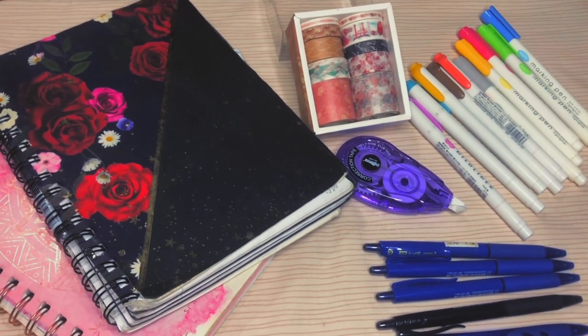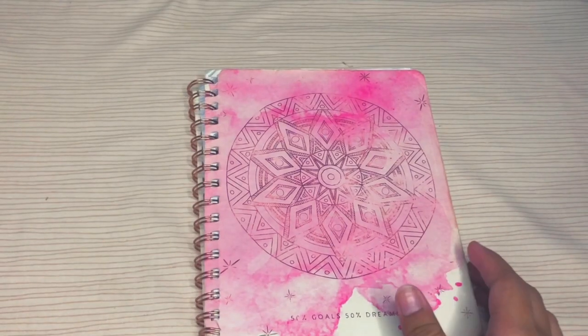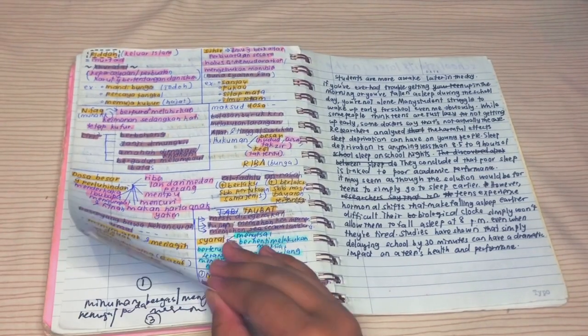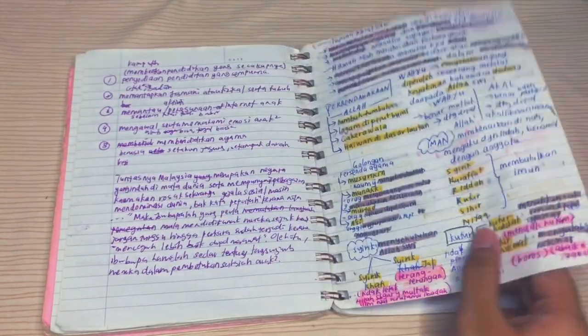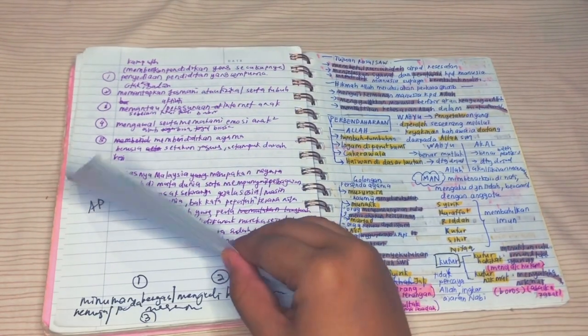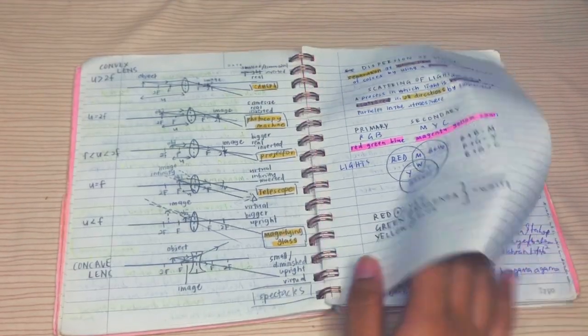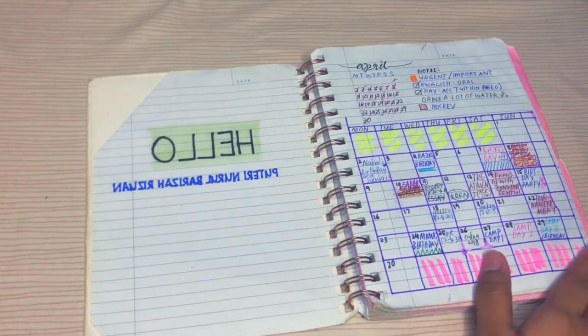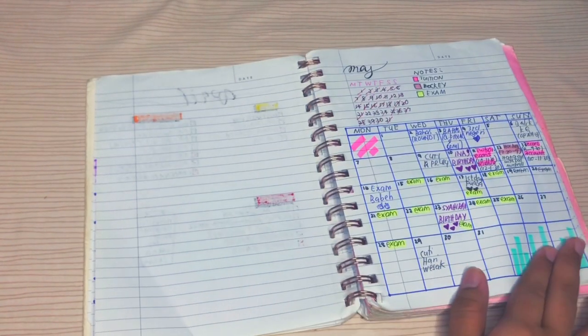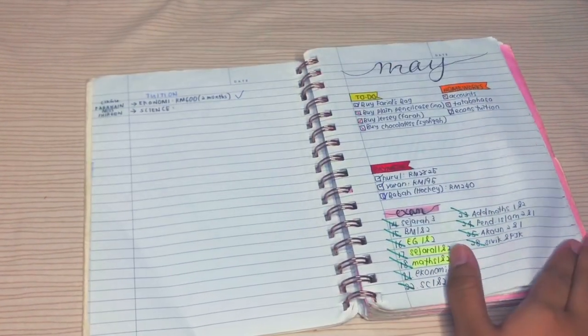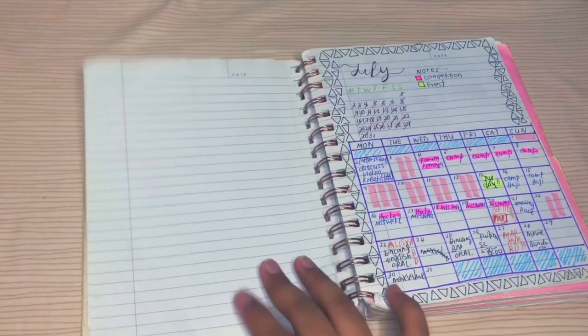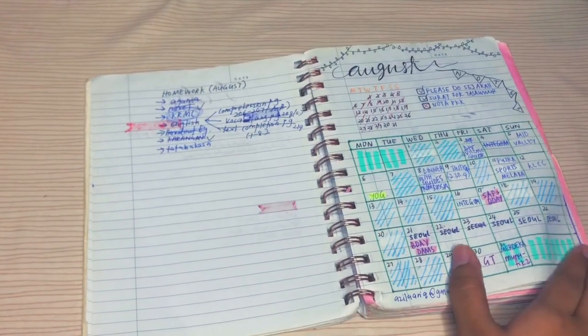So yeah, that's basically the stationeries that I use. Now I'm going to show you my notes. This is a notebook that I use when I'm in Form 4. So I basically just wrote everything that my teacher says, or when I have free time in the class. I also used it for my planner. But when I got into Form 5, I got lazy and I didn't have time to do it. But here's an overview of my planner.